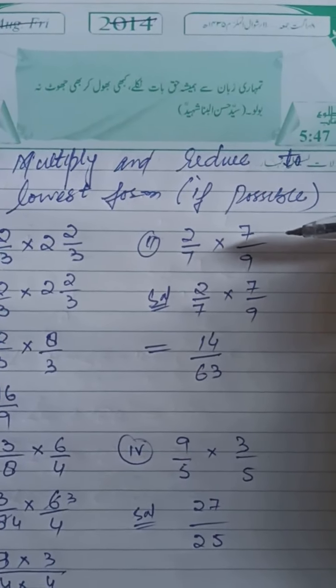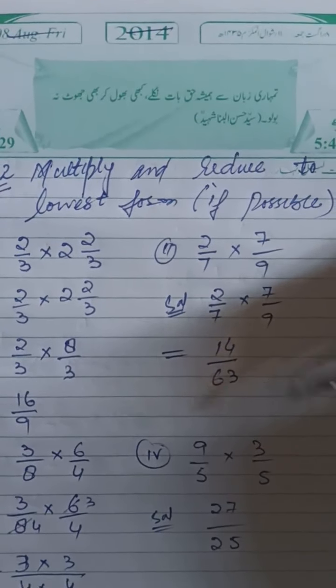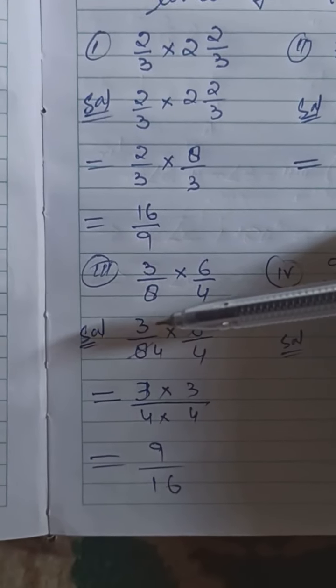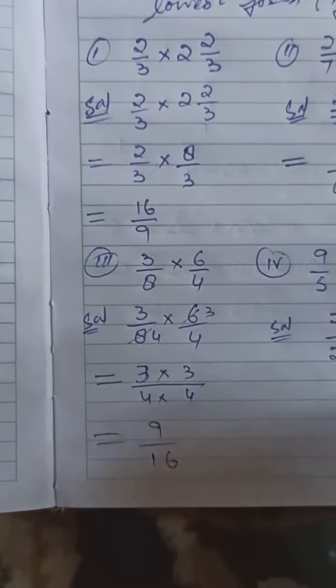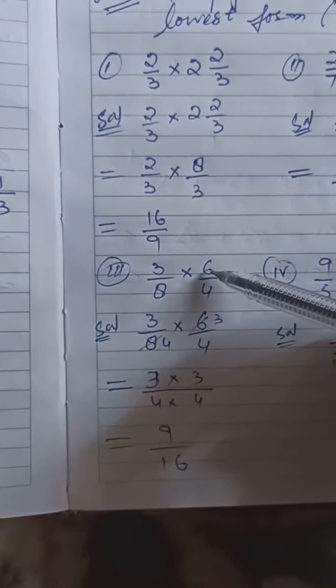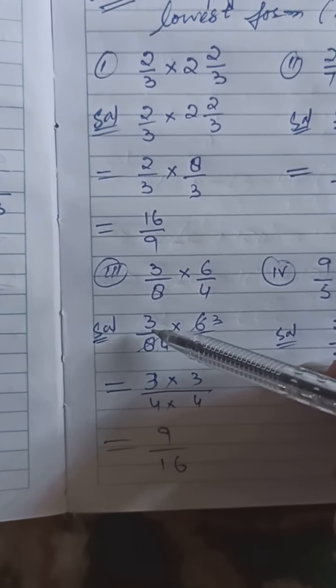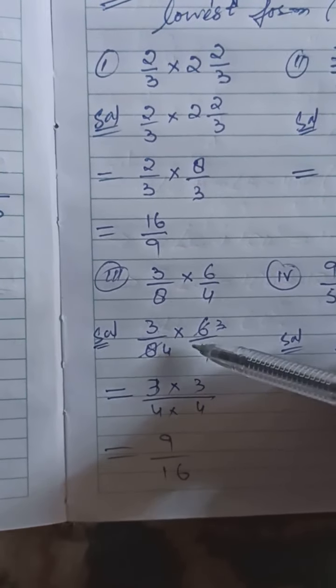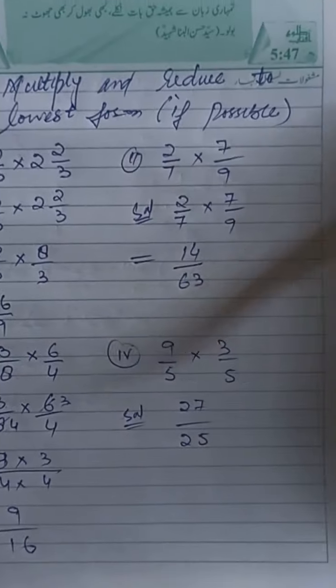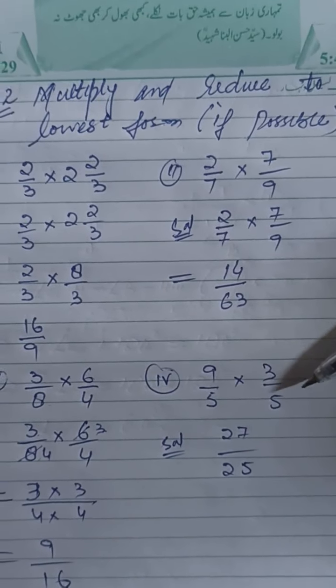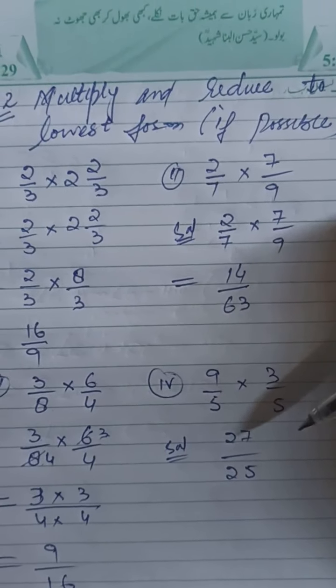2 by 7 into 7 by 9. 3 by 8 into 6 by 4. 2 side 6 and 2 side 8. 2, 3, 0, 6. 2, 4, 0, 8. 3 by 4. 3, 3, 0, 9. 4, 4, 0, 16. 9 by 5 into 3 by 5. 9, 3, 0, 27. 5, 5, 0, 25.